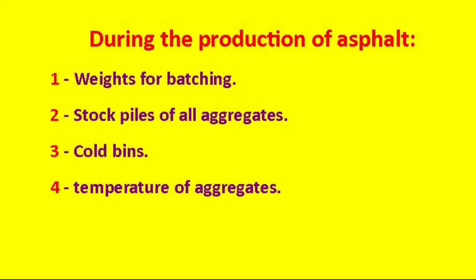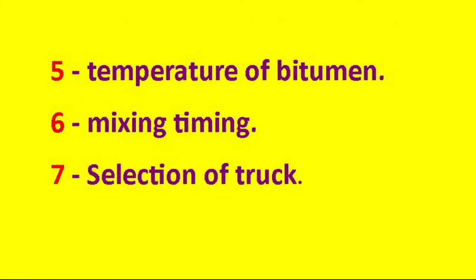During the production of asphalt, the key items to inspect include: weights for batching, stockpiles of all aggregates, cold bins, temperature of aggregates, temperature of bitumen, mixing timing, and selection of trucks.